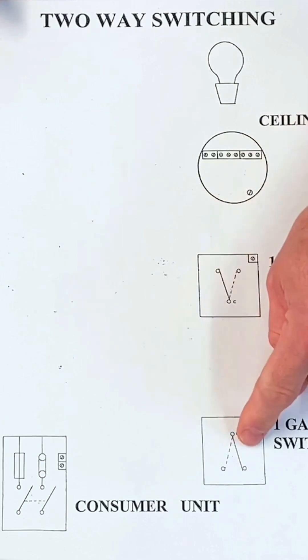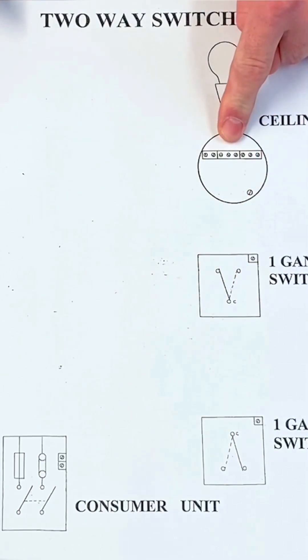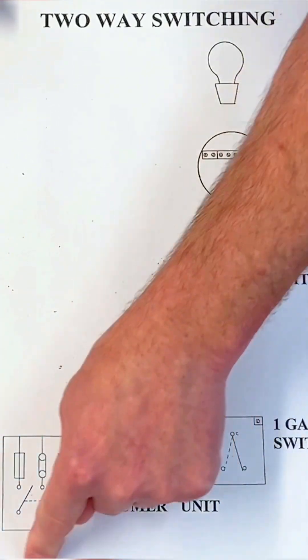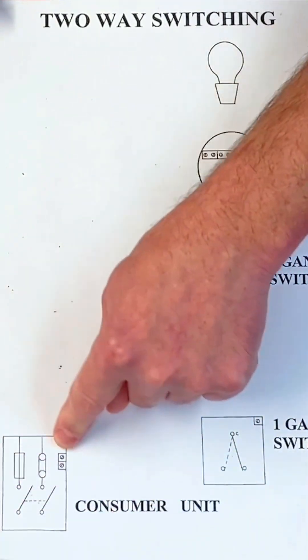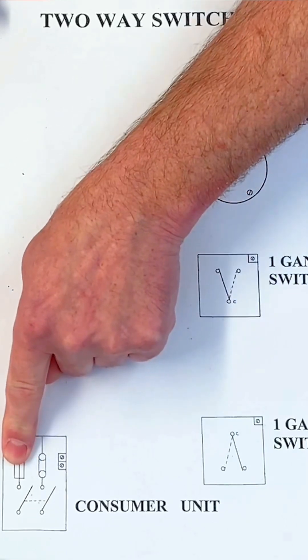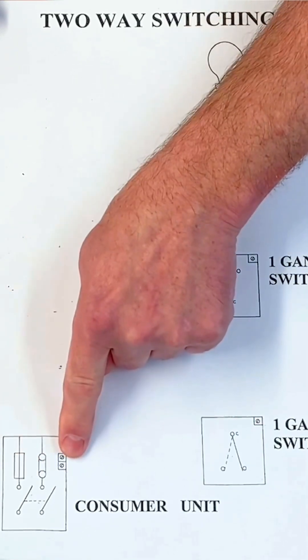These represent the connections within a two-way switch, as will the ceiling rose or batten lamp holder here. Remember from the first presentation, the connections within the consumer unit won't exactly look like it does on the drawing, but it shows us the fuse, the neutral link, and the earth connection for the CPCs. So let's have a look at what we've got.